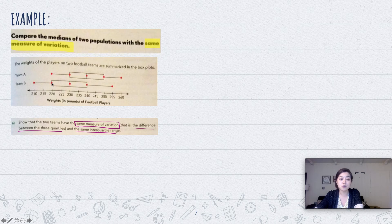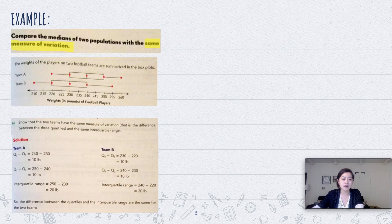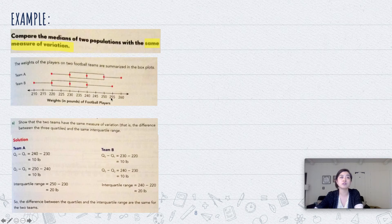For Team B, Q1 is the lower quartile, Q2 is the median, Q3 is the upper quartile, and then we have the lower and upper extremes. For Team A: Q2 minus Q1 equals 10 pounds, Q3 minus Q2 equals 10 pounds, and the interquartile range is Q3 (250) minus Q1 (230), which is 20 pounds.